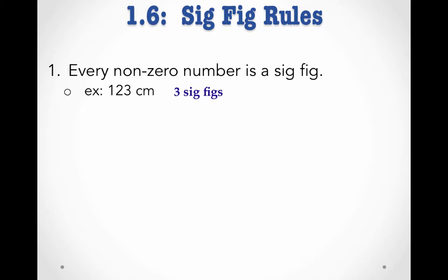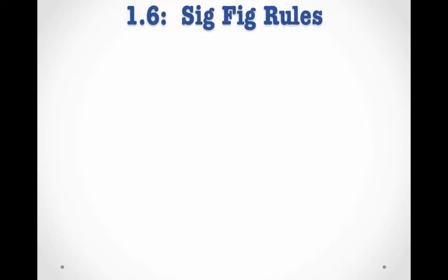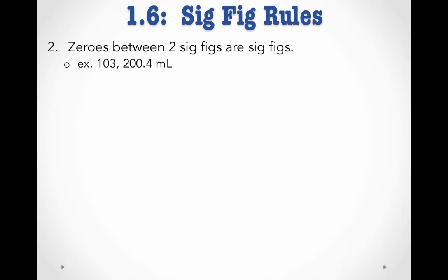It's when we start talking about zeros that things get a little hairy. So let's start with two rules that tell us when zeros are significant. Zeros are significant when they are between two sig figs. For example, a measurement of 103,200.4 milliliters — these zeros are between two other sig figs. Therefore, all of those zeros are significant, giving this measurement seven sig figs.